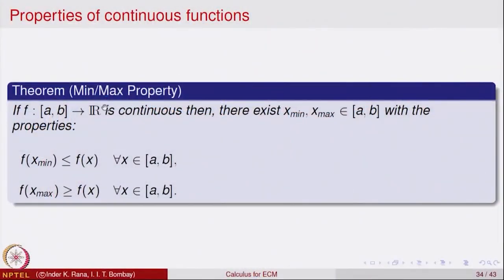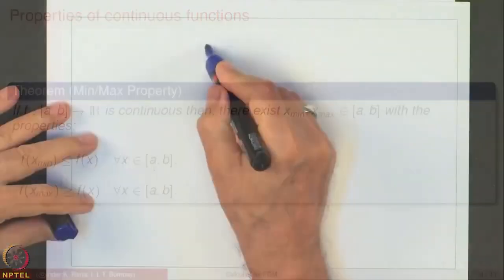The intermediate value property says the image of an interval is an interval under continuous functions. Here is a slight strengthening of that result: if the domain is a closed bounded interval [a, b], and f is continuous on [a, b], then there exist points x_min and x_max in [a, b] such that f(x_min) ≤ f(x) ≤ f(x_max) for every x in [a, b]. We can write the minimum value as m = f(x_min) and maximum as M = f(x_max).